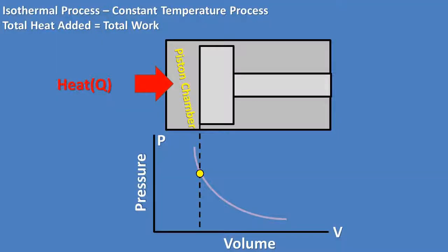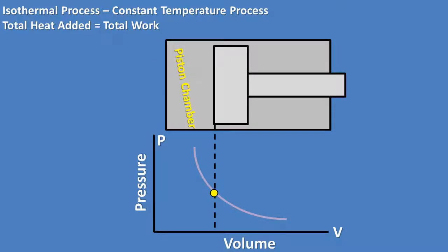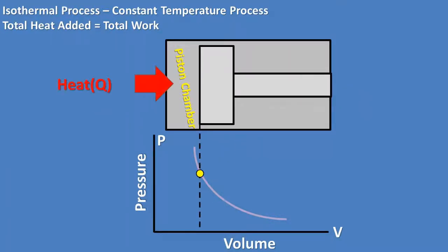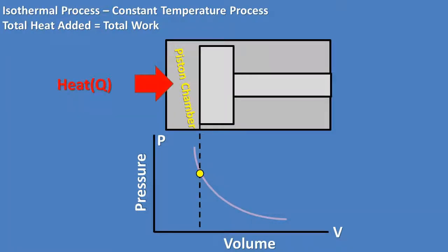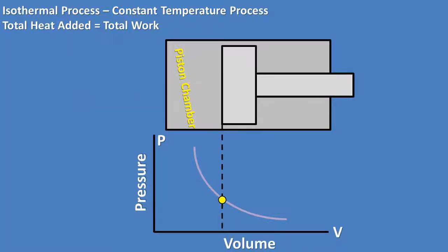In this problem, we have a piston that has heat added to a gas in the piston chamber. The heat added causes the pressure inside the piston chamber to increase, which causes the piston to move and it goes through a thermodynamic isothermal process.